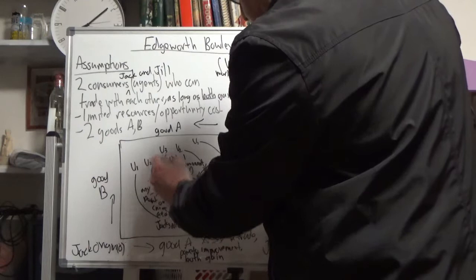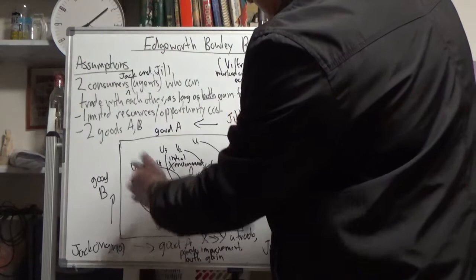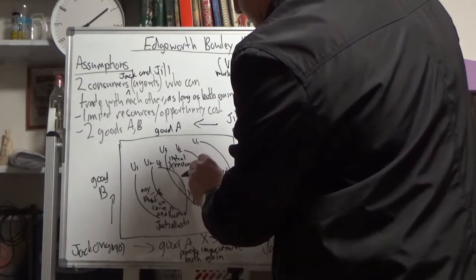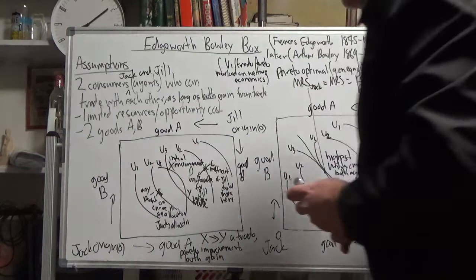These are Jack's utility curves U1, U2, and U3. U3 is the highest he can go. Similarly, Jill's utility functions are U1, U2, and U3. U3 is also the highest she can go, but they're facing different ways. That's Jack's indifference curve, that's Jill's indifference curve. They cross each other at two points, X and Y.